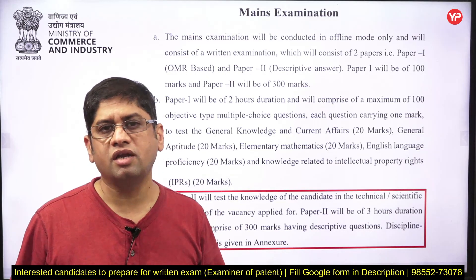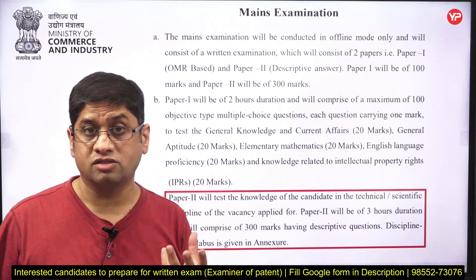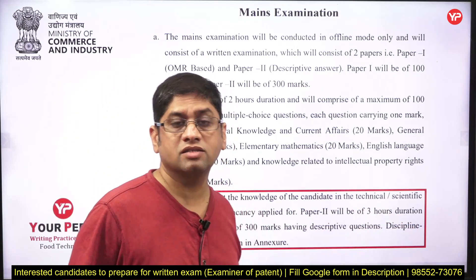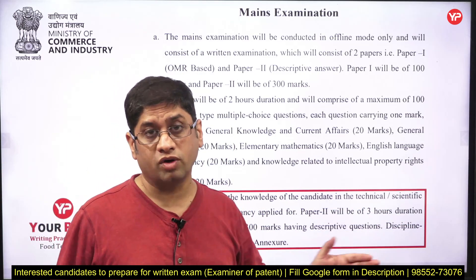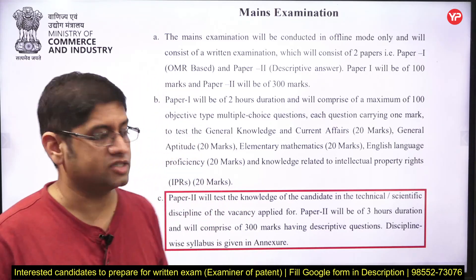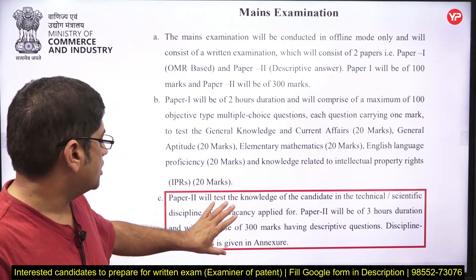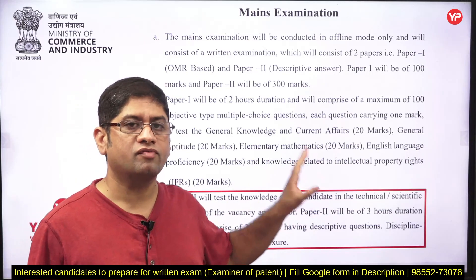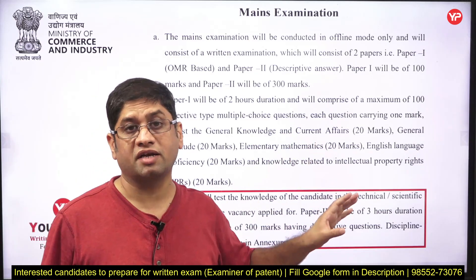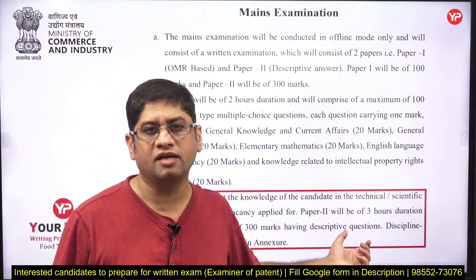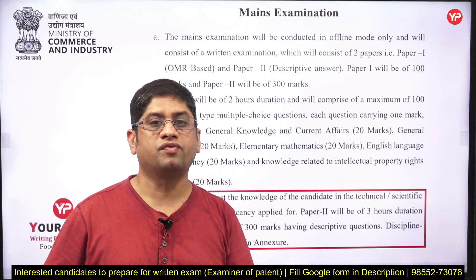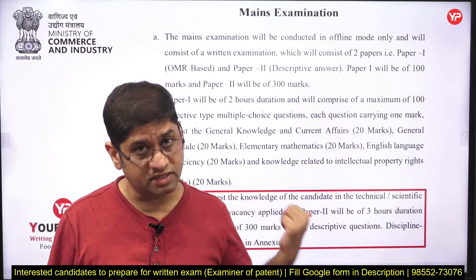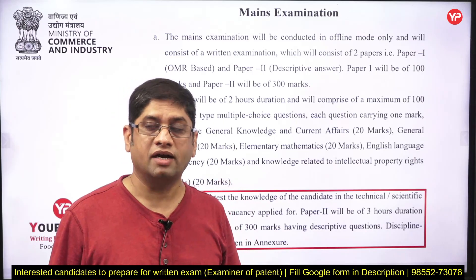Mains is 300 marks, which is a significant chunk for final selection. Paper 1 is 100 marks and Paper 2 is 300 marks. You can prepare for the 100-mark non-technical paper with Eurpedia, and for the 300-mark paper you can develop writing skills and take 50 to 100 topics from Eurpedia.